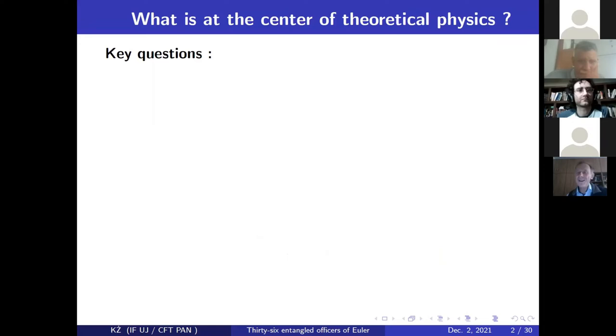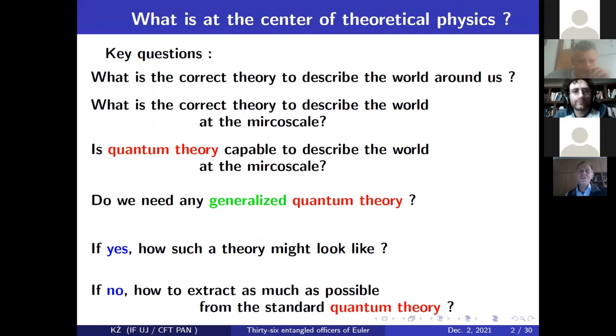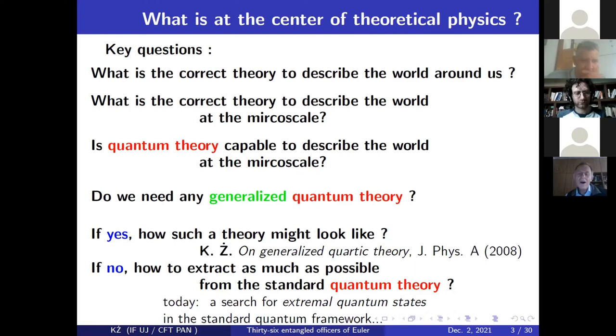What is at the center of theoretical physics in general? We would like to answer some basic questions like what is the correct theory to describe the world around us? What is the correct theory to describe the world at the micro scale? Is quantum theory capable to describe the world at the micro scale? If not, perhaps we need some more generalized quantum theory. If yes, how such a theory might look like? If no, how to extract as much as possible from the standard quantum theory?